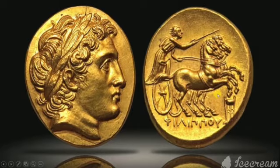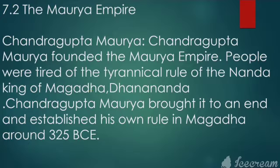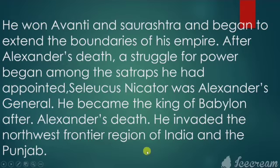Later, Indian kings also started minting similar coins. Section 7.2 covers the Maurya Empire. Chandragupta Maurya founded the Maurya Empire. The people were tired of the tyrannical rule of the Nanda king of Magadha — 'tyrannical' means having excess power used in a cruel way. Chandragupta Maurya ended Nanda rule and established his own rule in Magadha around 325 BCE. He also won Avanti and Saurashtra and began to extend the boundaries of his empire.